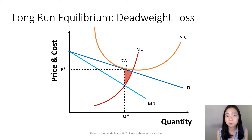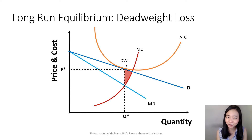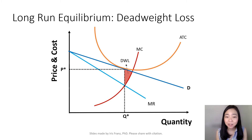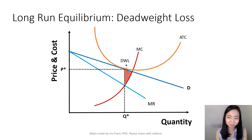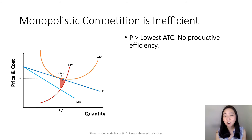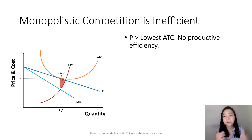The long-run equilibrium of monopolistic competition is inefficient. As a result, we have a deadweight loss. The deadweight loss is shown in the red shaded area, and I'm going to explain why we have this deadweight loss.